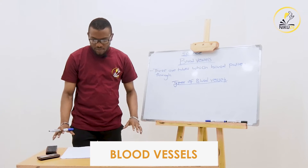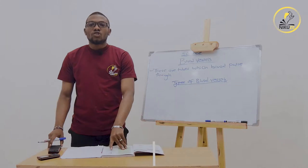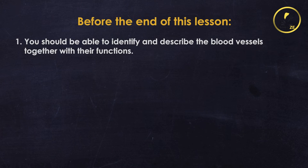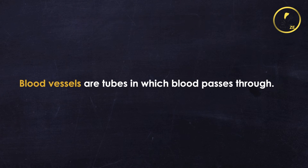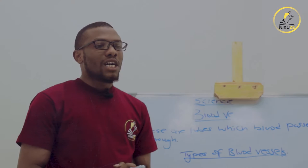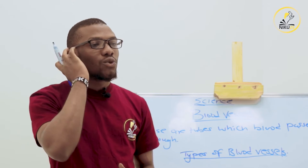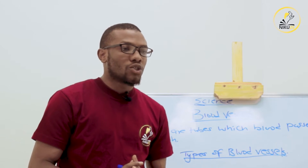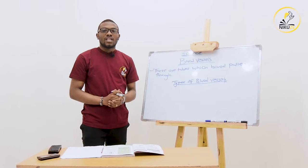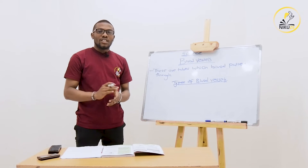So today we are going to look at the blood vessels. By the end of this lesson you should be able to identify and describe the blood vessels together with their functions. Blood vessels are tubes which blood passes through. Once the blood is pumped from the heart, for it to reach the different parts of the body it has to pass through these tubes, which we call the blood vessels.